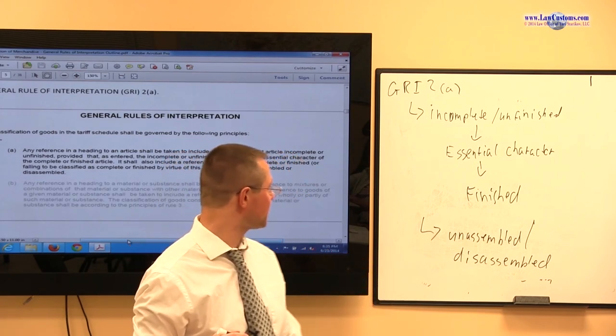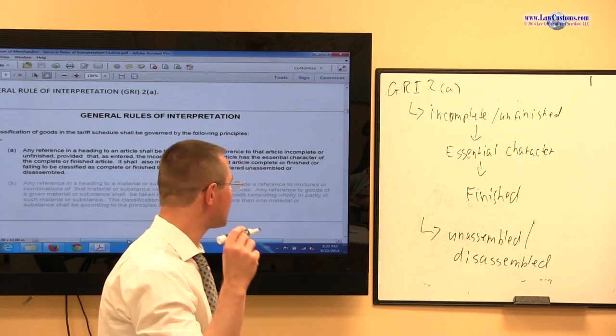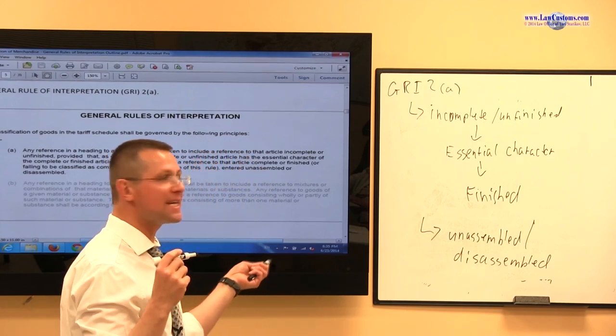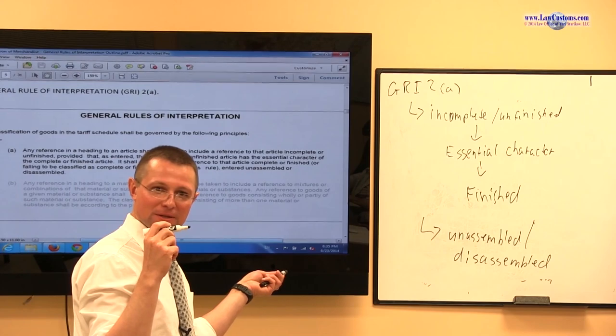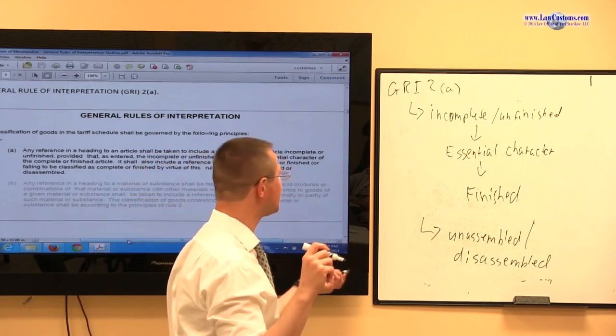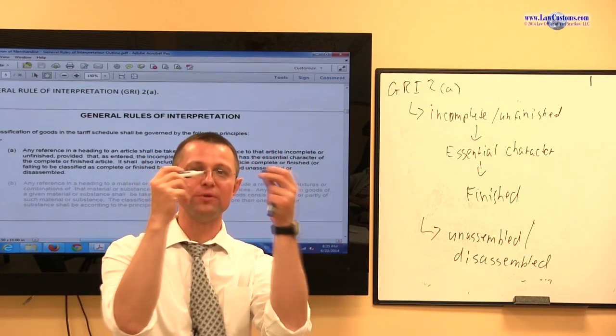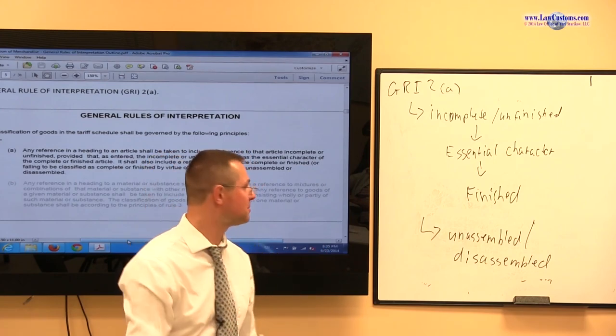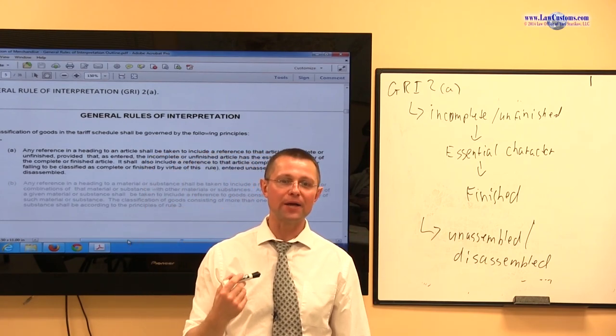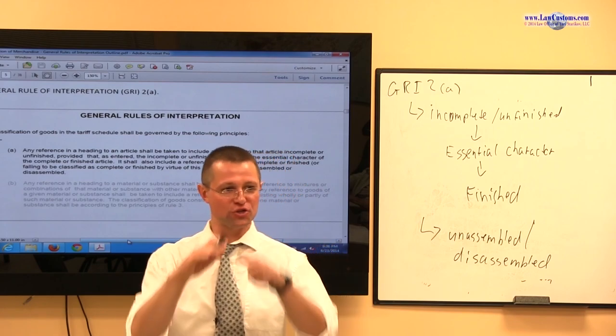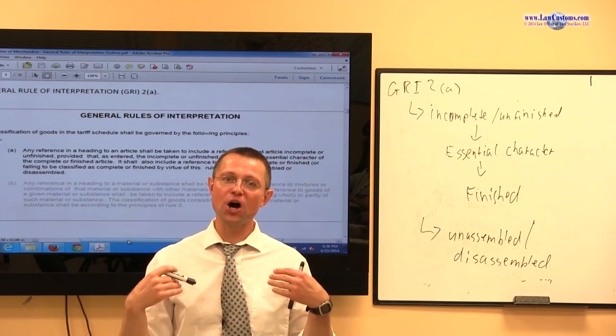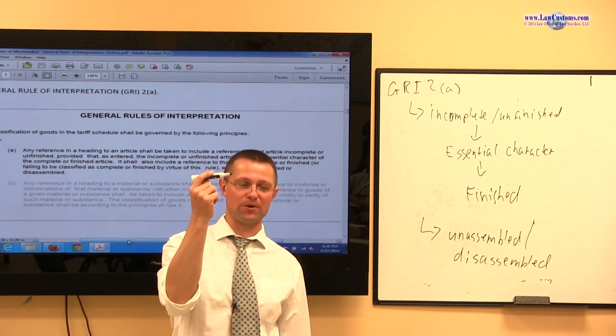So, in other words, the marker comes as incomplete product, right? You still have to put ink in, you still have to put a cap on to be able to use it. So, what are the rules within the GRI that allow me to classify this as a marker?